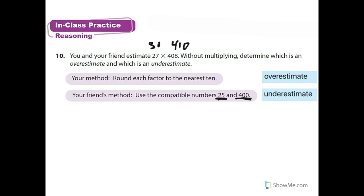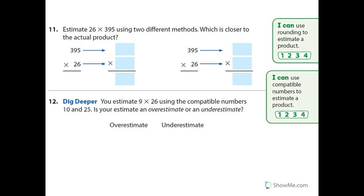Let me do number 11 with you. Let's look at the I can statements: I can use rounding to estimate a product. I can use compatible numbers to estimate a product. Rounding means we're rounding to the nearest whatever number we want to make easy numbers, and compatible numbers are numbers that are easy and close to the actual numbers.